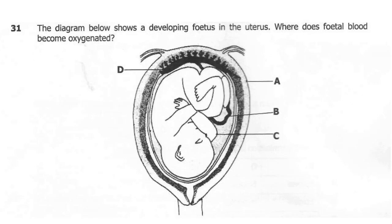Question 31. The diagram below shows a developing fetus in the uterus. Where does the fetal blood become oxygenated? The correct answer here is D. Blood ends up getting oxygenated at the placenta, because this is where exchange of material takes place. The fetus receives nutrients and oxygen from the mother, and gets rid of carbon dioxide and other metabolic waste. The placenta works as a medium for exchange of material.